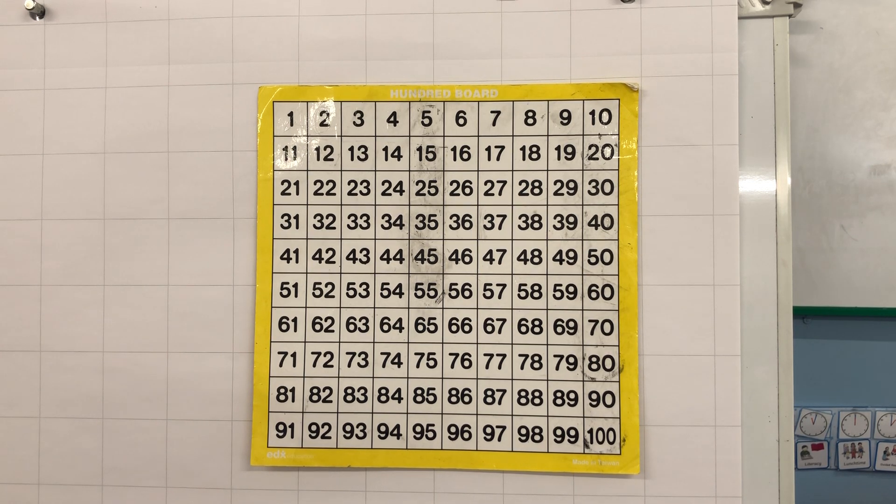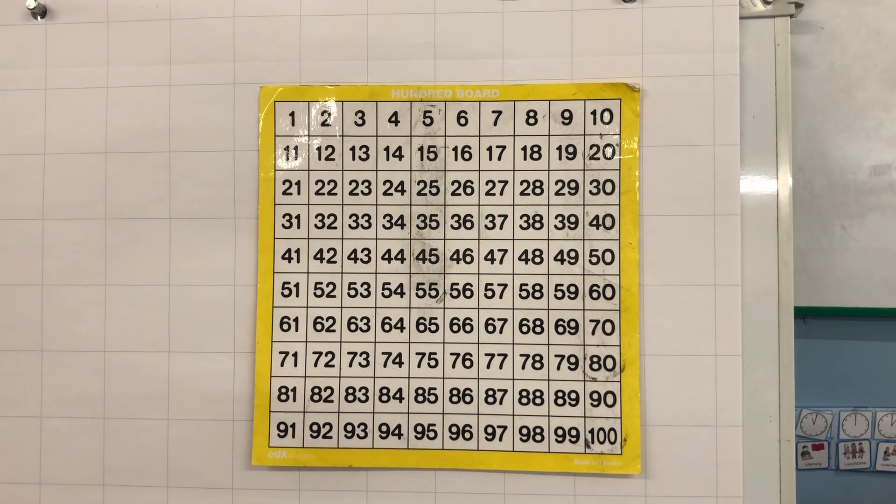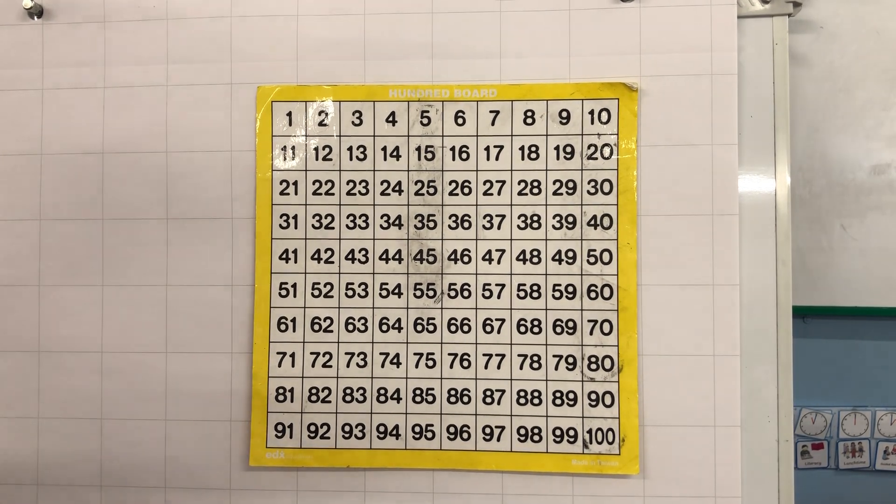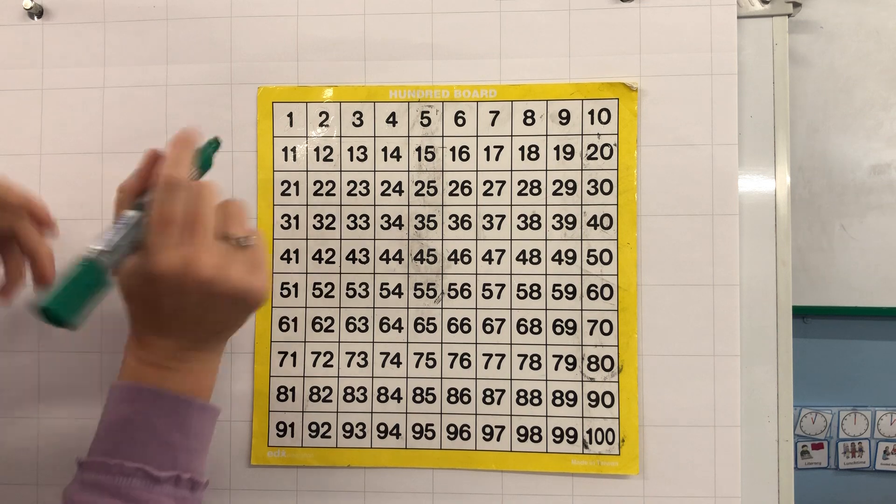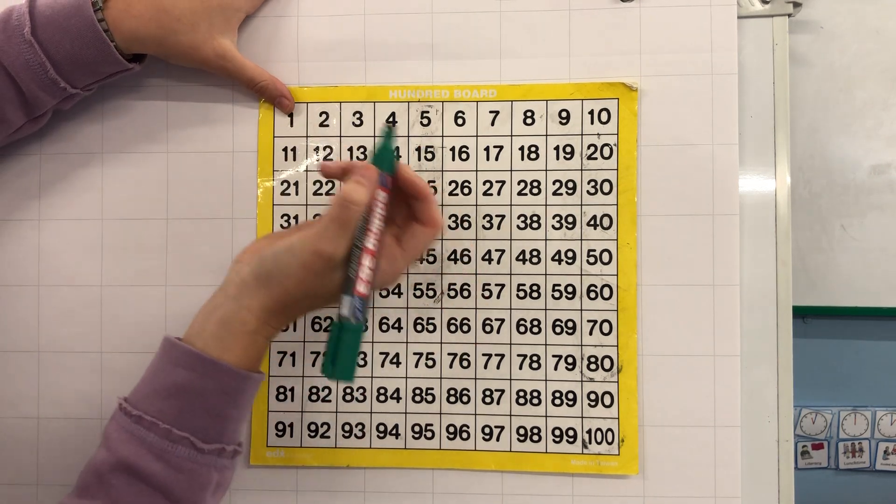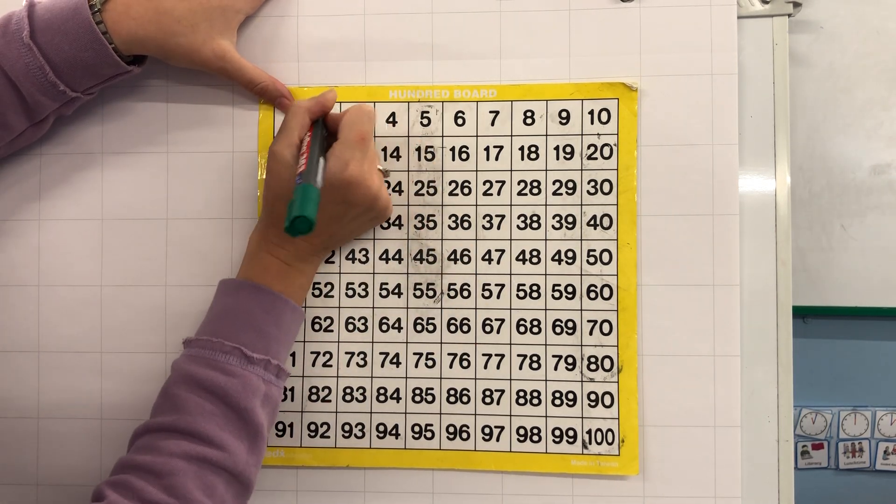Now in your home learning packs you have a 100 square too so you can use these to help you as well. When we are counting in multiples of 2 we start counting from 2. So I'm going to count in 2's and I'm going to circle the number 2 to help me.